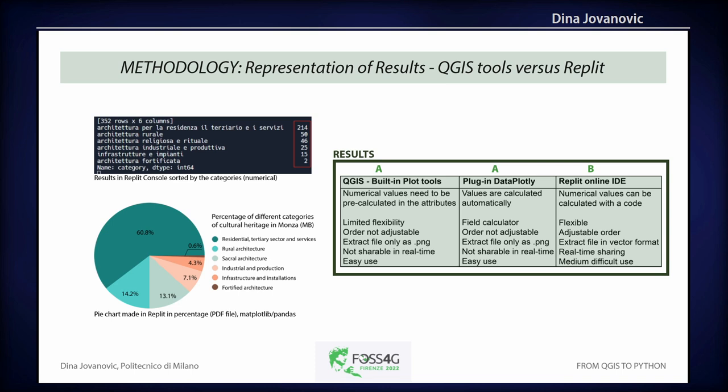The results were different. Replit is more flexible since you are working with code, with real-time sharing, though it is medium difficulty to use especially if code is already provided. It allows a large variety of numerical values to be calculated in many different ways, while in the DataPlotly plugin there is a field calculator, and in the Plots tool there is no such flexibility or big variety in range.